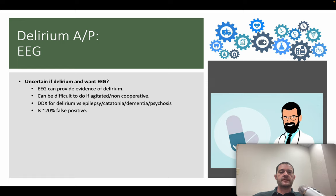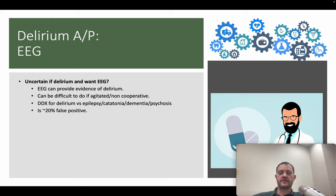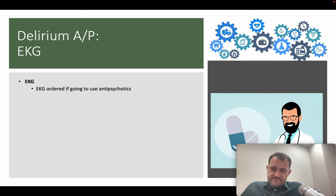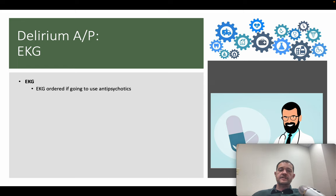EEG can theoretically provide evidence of delirium and help differentiate it from conditions like ongoing seizure, catatonia, dementia, or psychosis. However, a one-in-five false positive rate and the general impracticality of performing EEG on agitated patients make it more of an academic consideration. It's not super helpful in most real clinical situations.